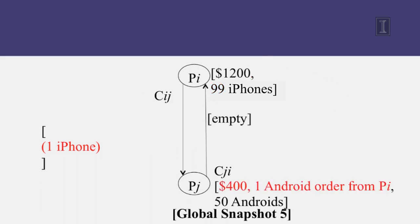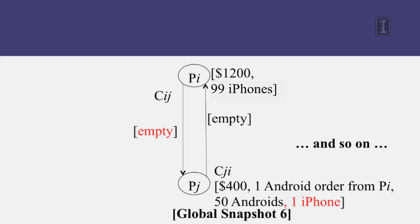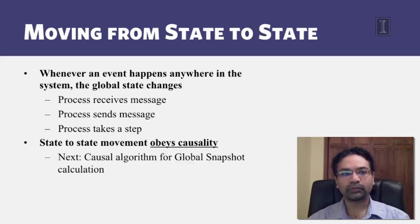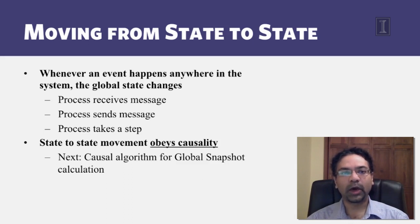The Android order is received from PI at PJ — PJ's balance goes up and it has the outstanding Android order. Then the iPhone is also received at PJ, and both of these result in two different global snapshots. The system continues like this, moving from one global snapshot to the next via a series of events — essentially causal paths that global snapshots move through. Whenever an event happens anywhere in the system, whether a process receives a message, sends a message, or takes a step, one event is enough for the entire global state to change, because the global state captures everything in the system.